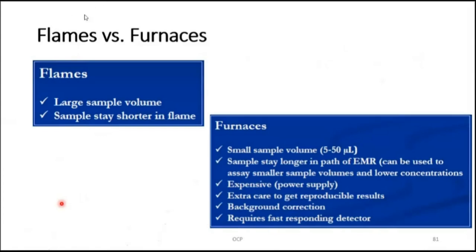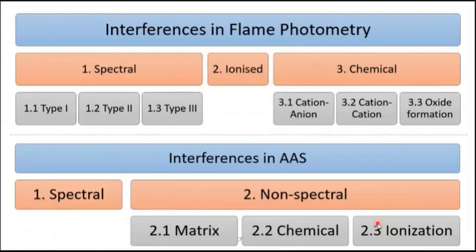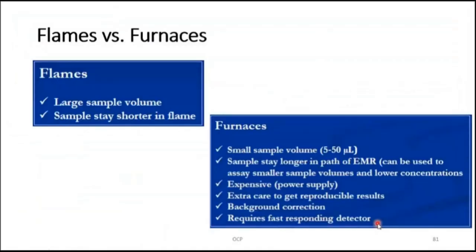Comparing flame versus furnace: for flames, large sample volume is required and samples stay in the flame for a shorter period of time. For furnaces, small sample volume (5–50 microliters) is required and samples stay longer in the path of electromagnetic radiation, giving better results. Furnaces can access smaller sample volumes at low concentration. However, furnaces are comparatively expensive, reproducible results are harder to achieve, background correction is needed, and fast-responding detectors are required.